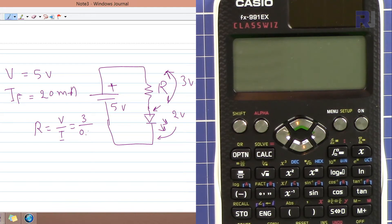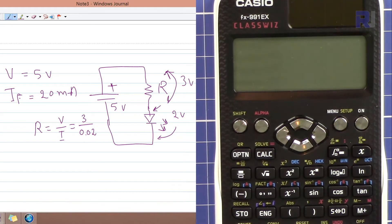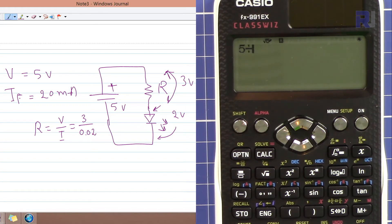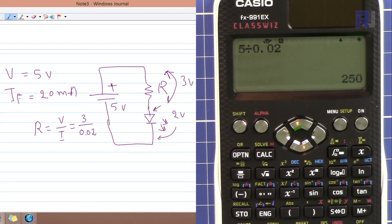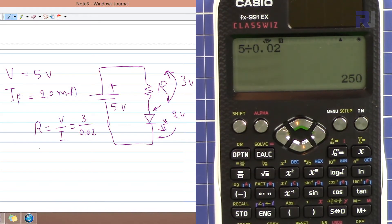Now let's do it and calculate that. 3 divided by 0.02, so it needs a 250 ohm resistor.